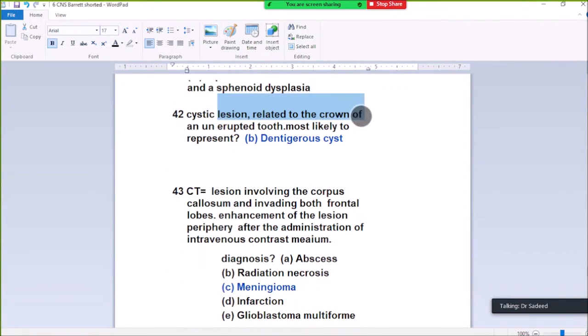Question 42. Cystic lesion related to the clivus at the nasopharynx, most likely diagnosis is Tornwaldt cyst. Cystic lesion at the clivus at the nasopharynx, diagnosis is Tornwaldt cyst.